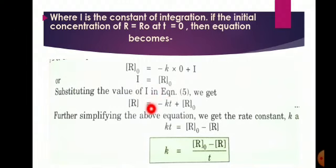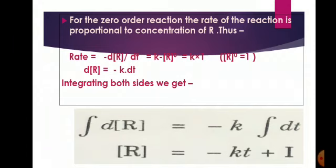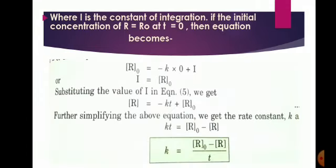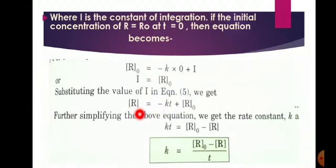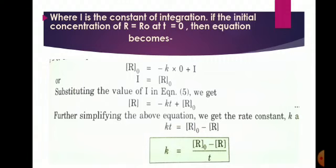Where I is the constant of integration. If the initial concentration of R is equal to R₀ at t = 0 — meaning at the time when the reaction has not started, time is 0 and concentration is the initial concentration R₀ — then substituting: R₀ = minus k(0) + I, so I = R₀. Putting this back into the equation: R = minus kt + R₀. Rearranging: kt = R₀ minus R, so k = (R₀ minus R) upon t. This is the formula to remember for solving numericals.